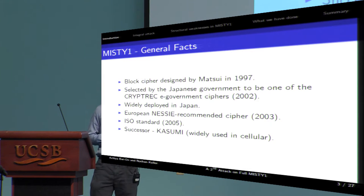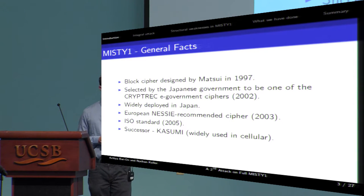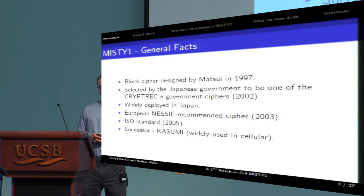It is a block cipher that was published and designed by Matsui in 1997, and got several recognitions since then. It got recognition from the Japanese government, from the European NESSIE project, and also been accepted as ISO standard. Its most famous successor is called Kasumi, that is widely used in 3G cellular communication. We will return to it later.